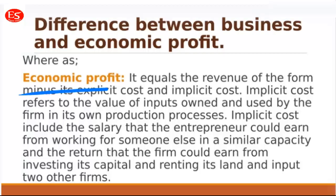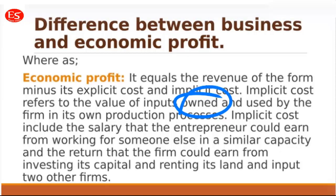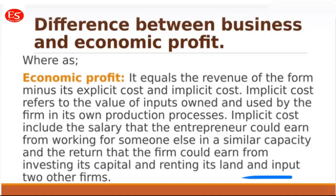Economic profit equals revenue minus both explicit and implicit costs. We've discussed explicit cost; now we need to understand implicit cost. Implicit cost refers to the value of inputs owned by the entrepreneur and used in the firm's own production processes. For example, the salary an entrepreneur could earn working for someone else with the same capacity.